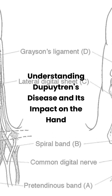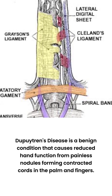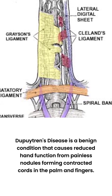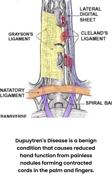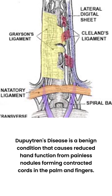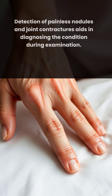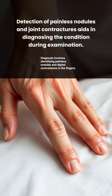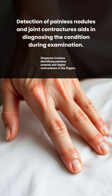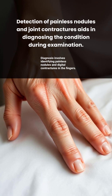Dupuytren's disease — hand ortho bullets. Dupuytren's disease is a benign condition marked by decreased hand function due to painless nodules turning into contracted cords in the palm and fingers. Diagnosis is based on detecting these painless nodules and associated digital contractures around the MCP and PIP joints during a physical examination.